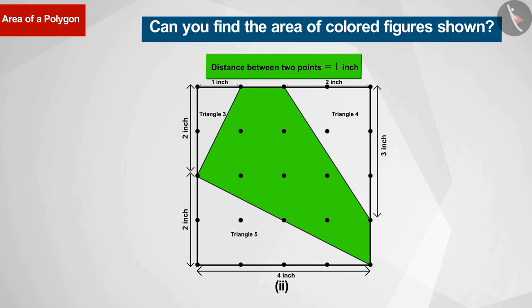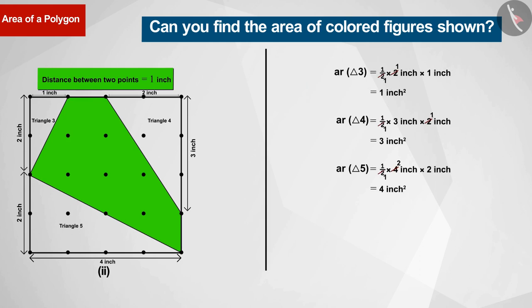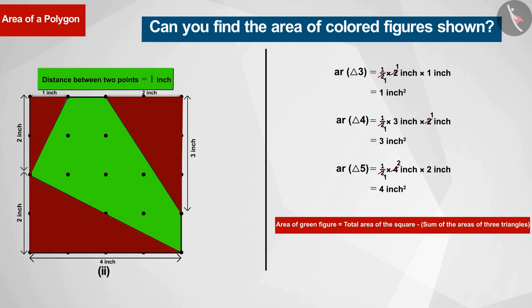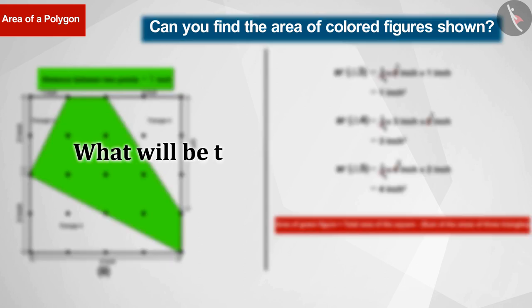You can find their area, and then by subtracting the sum of the areas of the three triangles from the total area of the square, we get the area of the green figure. So can you tell what will be the area of the square?